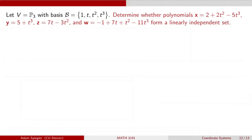And let's say we have a set of polynomials X, Y, Z, and W. So X is the polynomial 2 plus 2T squared minus 5T cubed. Y is the polynomial 5 plus T cubed. Z is the polynomial 7T minus 3T squared. And W is the polynomial minus 1 plus 7T plus T squared minus 11T cubed.